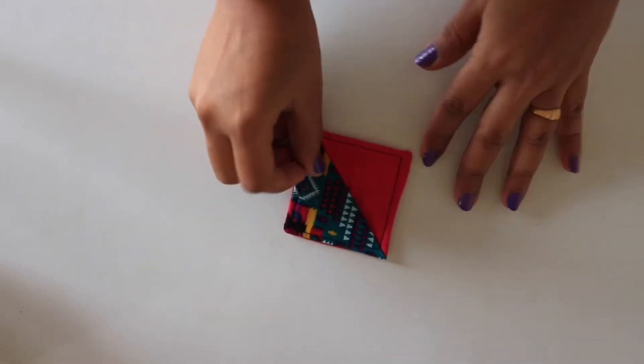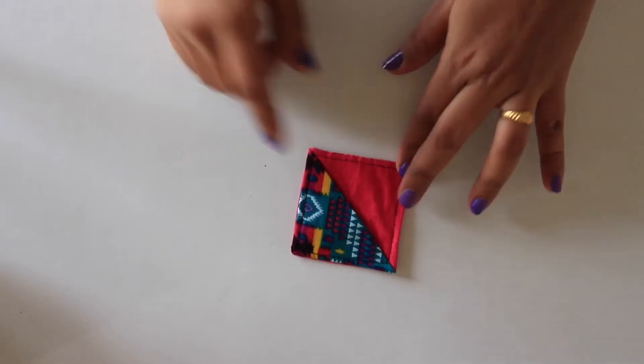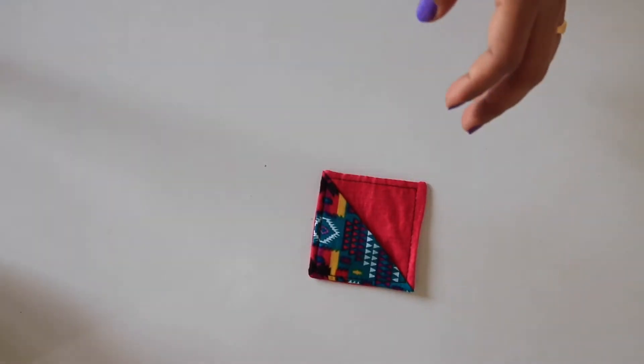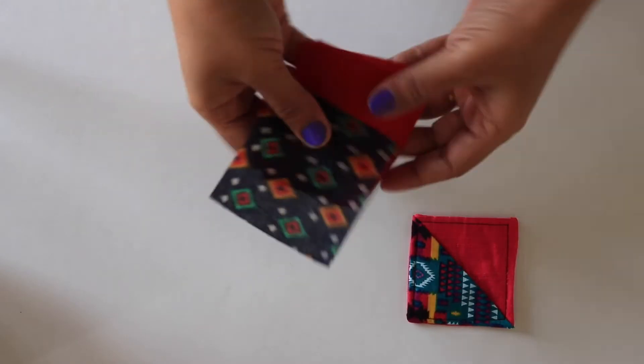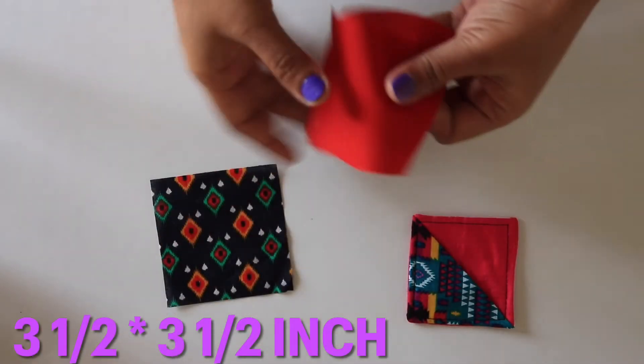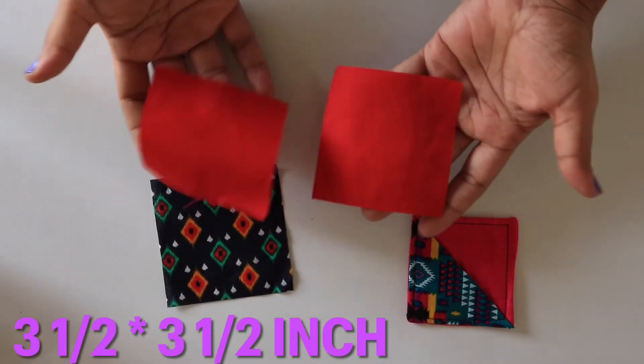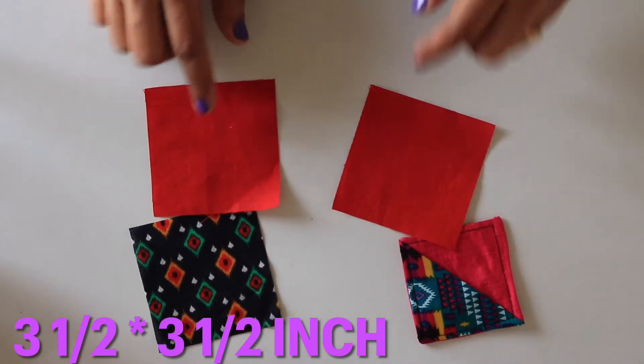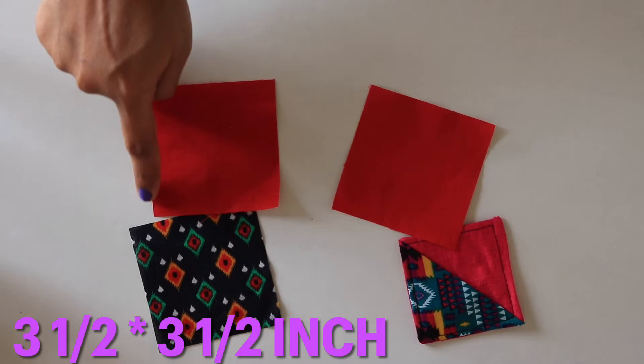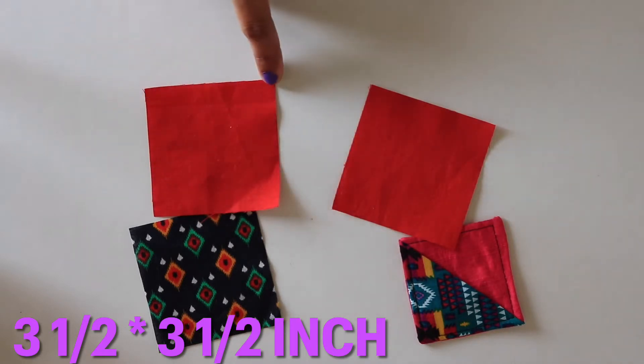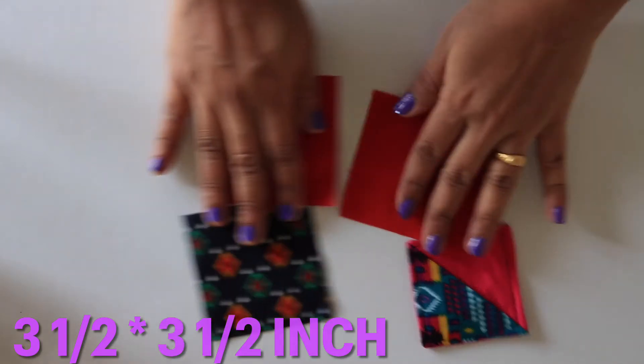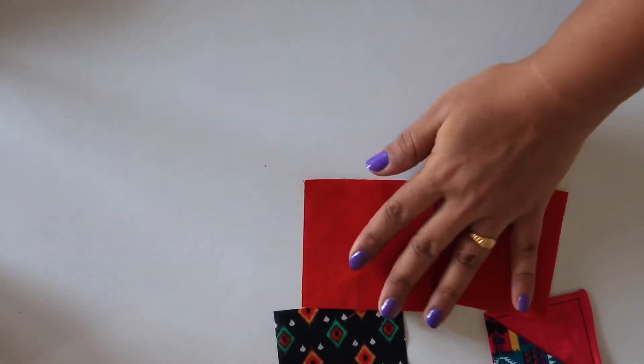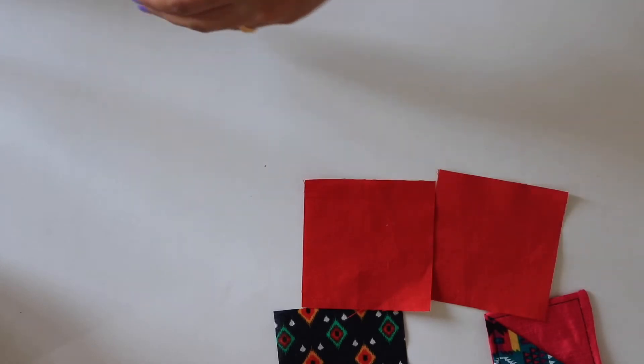You will need 3 pieces of fabric. It can be 3.5 by 3.5 inch or 4 by 4 inch squares. Depending on your fabric scraps, you can decide the size of square. But remember, all should be of same size. Mine are 3.5 by 3.5 inch squares. You can take any fabric - it can be same, different, or mixed. It's totally up to you.